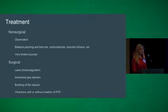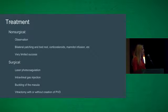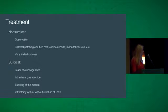There is wide variation in how these patients are treated. Historically, approaches have included observation, patching and bed rest, steroids, and mannitol infusion, all with very limited success, and these have largely fallen into disuse. As far as surgery, choices include laser photocoagulation alone, intravitreal gas injection alone, and even macular buckling. Nowadays, the most common treatment is vitrectomy with or without creation of a PVD, and with or without gas tamponade with or without laser.